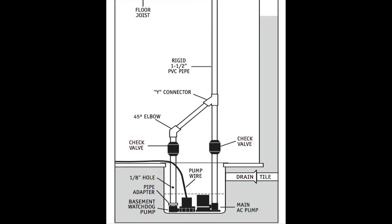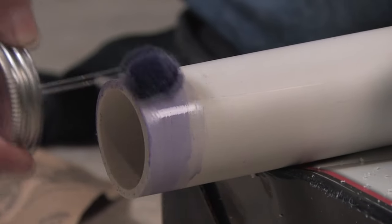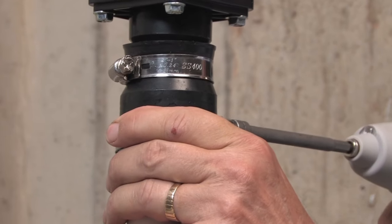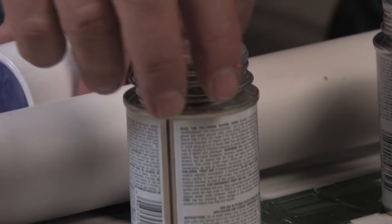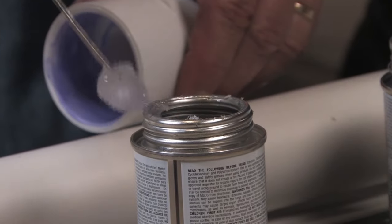The pipes are the correct length when the discharge pipes on both pumps are parallel and both pumps rest on the floor of the sump pit. Once the assembly is correct, take the pieces apart, prime and cement all the connections, and tighten the hose clamps on the check valves. See the video segment on cutting and gluing pipe if you're not familiar with the process.